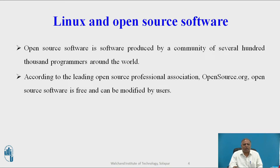Linux and Open Source Software is open source software produced by a community of several hundred thousand programmers around the world. According to the leading Open Source Professional Association, OpenSource.org, open source software is free and can be modified by users. Works derived from the original code must also be free, and software can be redistributed by the user without additional licensing.